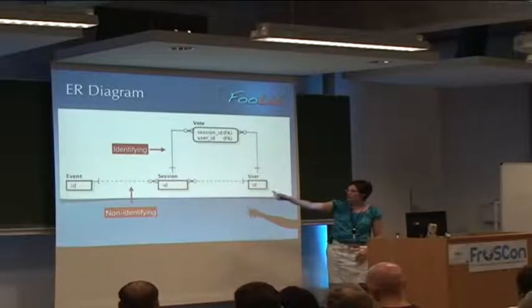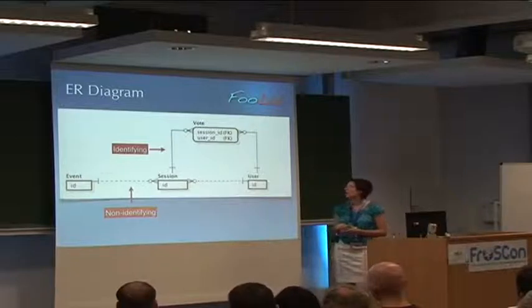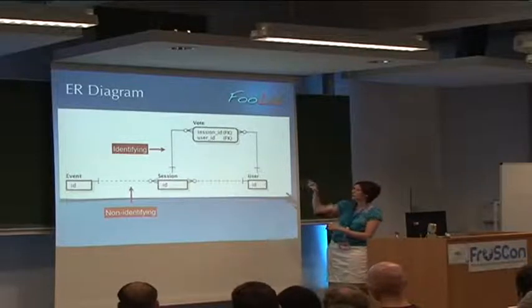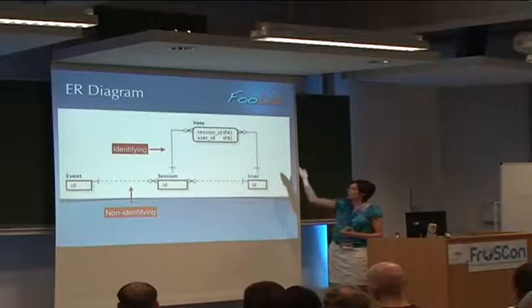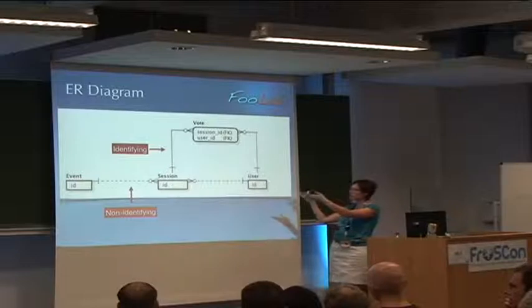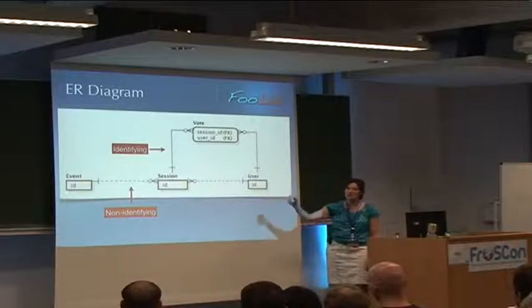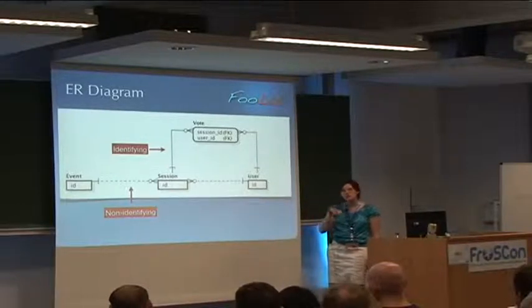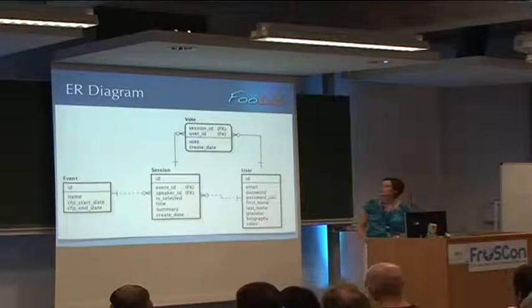Something you need to know here. If you're wondering about why there's a dotted line and a solid line, a solid line is identifying. The other one is not identifying. What it means is that you can identify the vote uniquely only if both parents exist. Right? If the user doesn't exist, there's no user ID. You cannot identify this. So basically, what it creates is called an associative entity. So it creates, it associates a session to a user basically with optional data afterwards. And non-identifying means that an event can exist separately. A session cannot exist separately, but it can be identified directly. So you don't need to be aware of the event in order to identify your session, because a session has already an ID. Just a little detail.